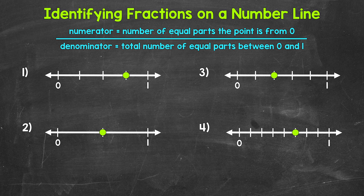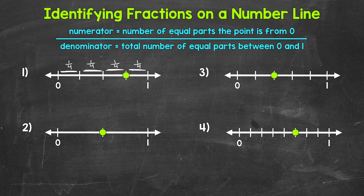This is going to be our denominator. We have one equal part, two equal parts, three equal parts, four equal parts. This tells us we have fourths. Each equal part is one fourth of the whole. So our denominator is going to be the total number of equal parts between zero and one. Four is our denominator.